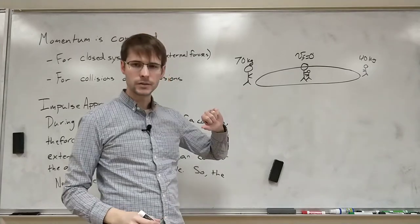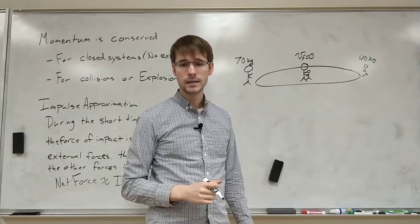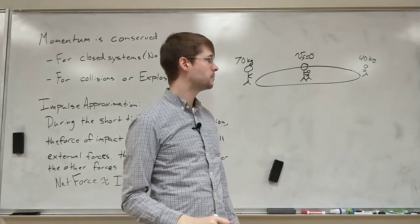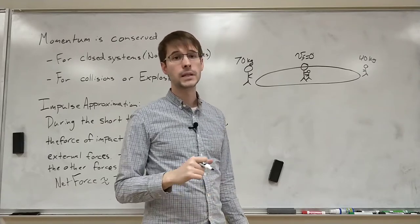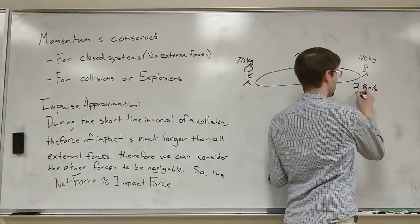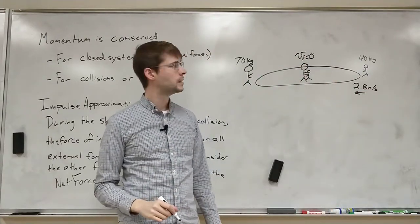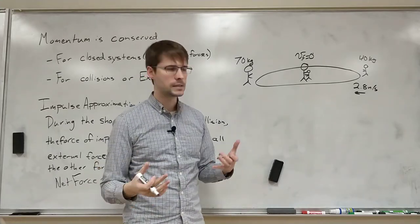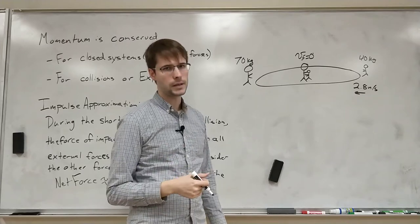So their final velocity is zero. The big brother has a mass of 70 kilograms. The little brother has a mass of 40 kilograms. And the little brother has an initial velocity of 2.8 meters per second to the left. So let's try to figure out what was the big brother's initial velocity. We're going to have to talk about momentum being conserved. It's the same at the beginning as it is at the end. So let's do some quick calculations on this.